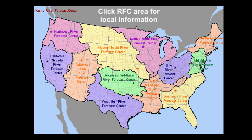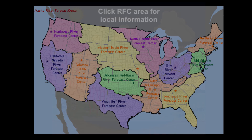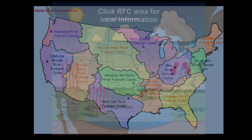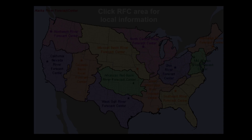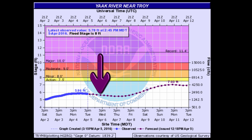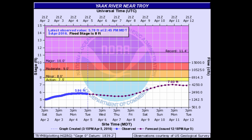Their hydrologists and meteorologists produce these sophisticated modeling tools that simulate soil, snow, and river conditions. The points are plotted with local time, which are shown on the x-axis on the bottom.